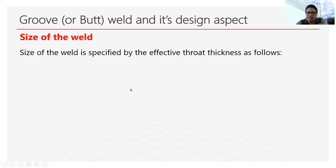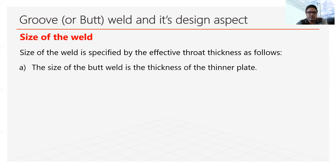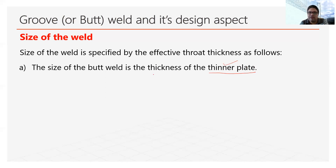We will see the difference in calculation of effective throat thickness for different groove welds. The size of the weld, as mentioned, is specified by the effective throat thickness. For two unequal-thickness plates, the effective throat thickness is considered equivalent to the thickness of the thinner plate, but in most cases they are the same — so the thickness of the plate equals the effective throat thickness.